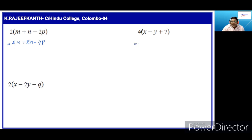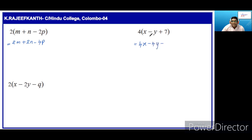Here, 4 into x minus y plus 7. So, we should multiply by 4 this expression — that means we have to multiply each term by 4. Then, 4 into x is 4x. Minus, 4 into y is 4y. Plus, 4 into 7 is 28.